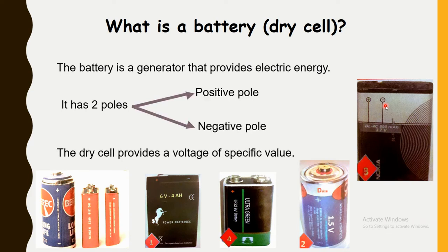The dry cell provides a voltage of a specific value. For example, this one provides a voltage of 1.5 volts. This one 9 volts. This one 6 volts.